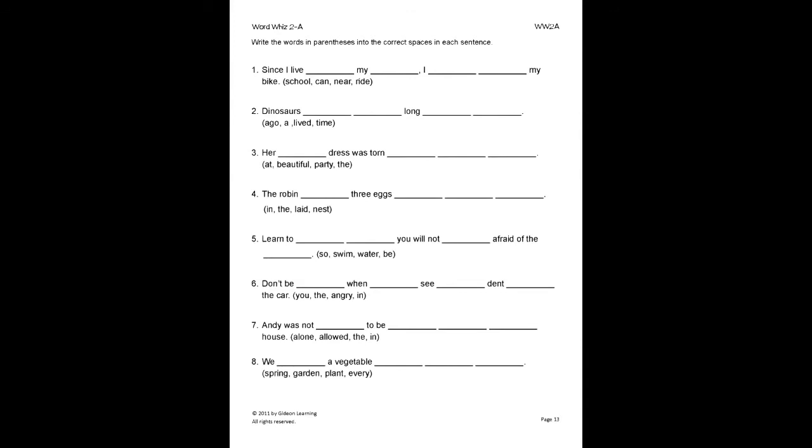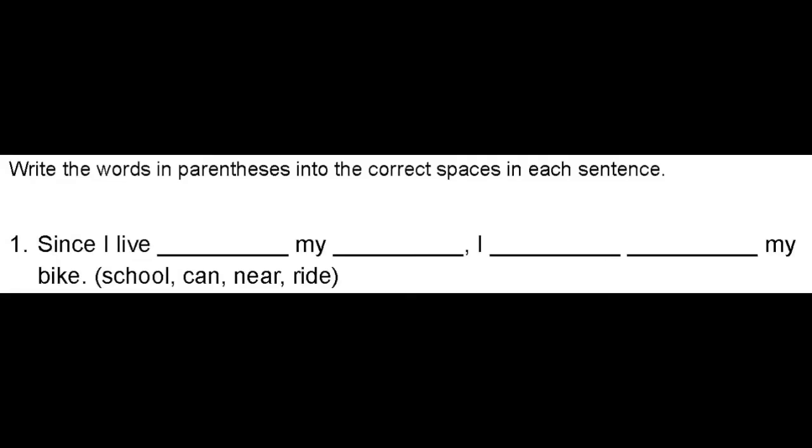Here, the student will write the words in the parentheses into the correct spaces in each sentence. Let's look at number one for example. Since I live blank my blank, I blank blank my bike. So, we look at the words given in parentheses and form a complete sentence by neatly writing the words in the correct blanks. Since I live near my school, I can ride my bike.